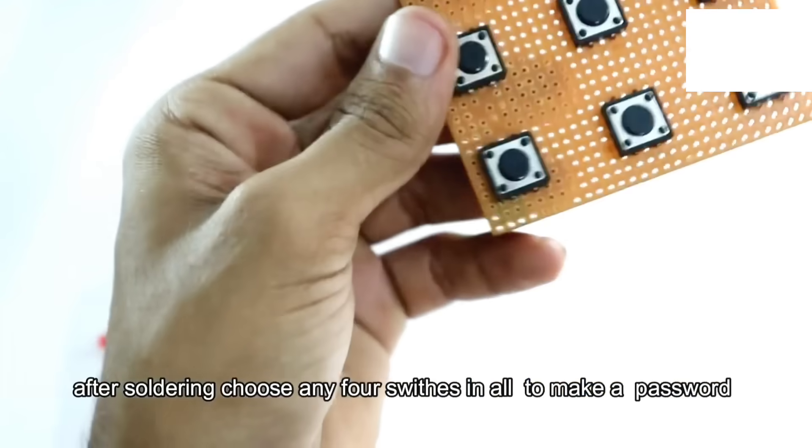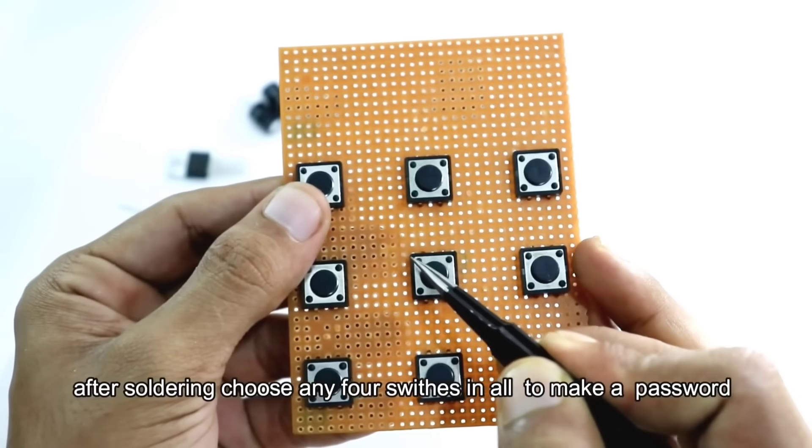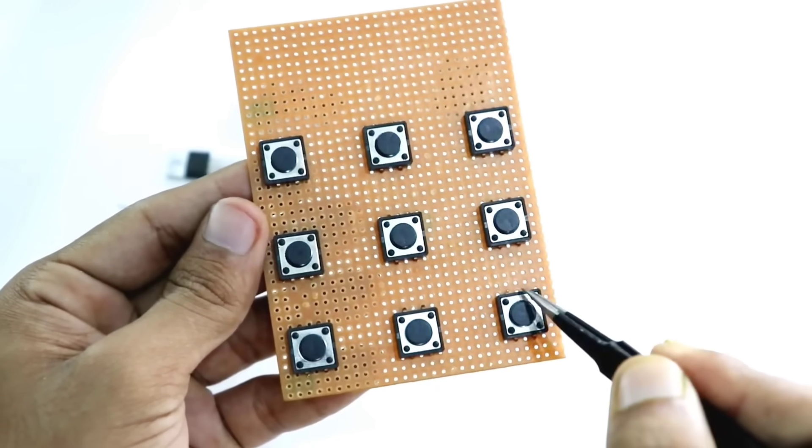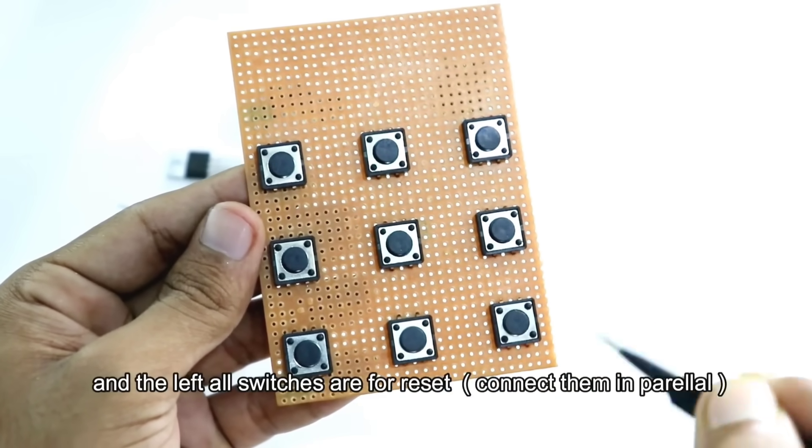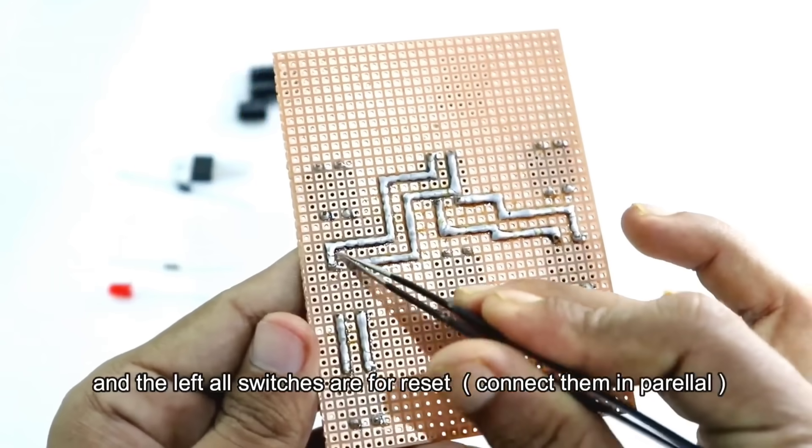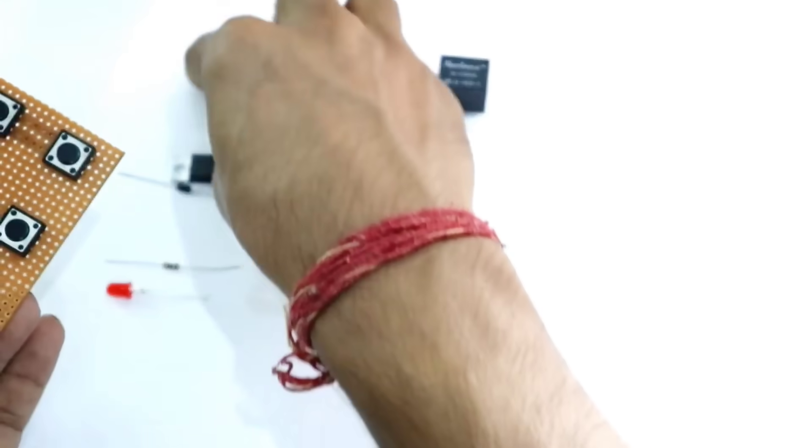Now comes the password part. From the nine switches, we selected any four switches to act as the password. These four switches will need to be pressed in the correct combination to unlock the system. The remaining five switches are used as reset switches, which help clear the input if a wrong password is entered. This setup works as a basic smart password lock system.